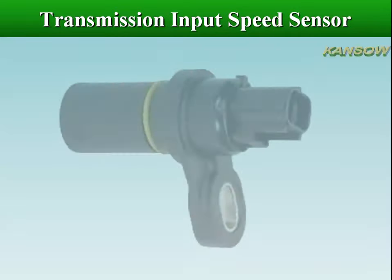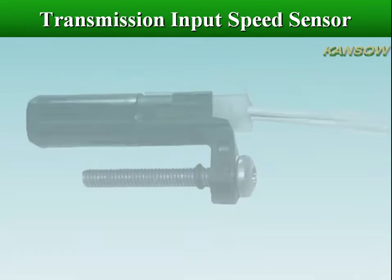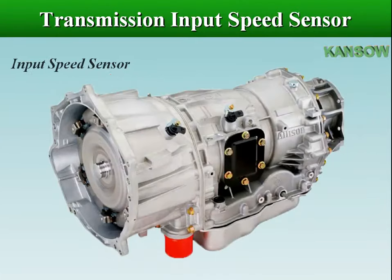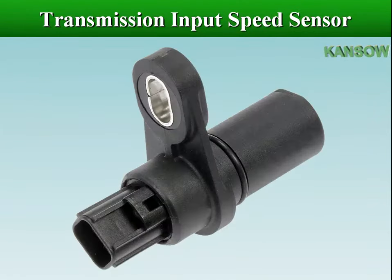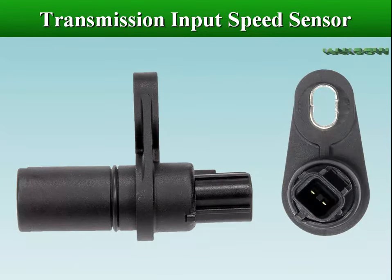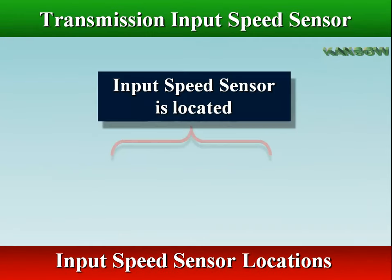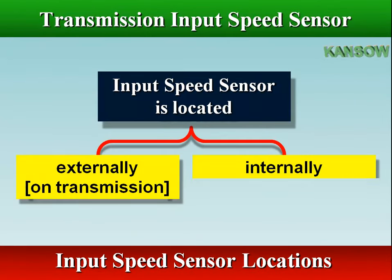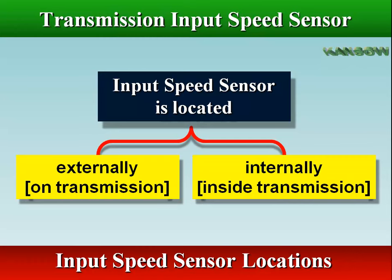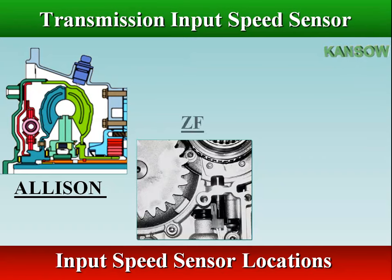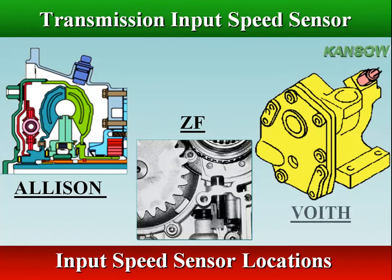The input speed sensor is tasked to monitor the vehicle's transmission input speed. This sensor can measure how many RPM — revolutions per minute — the input shaft is turning. The input speed sensor is located on or inside the vehicle's transmission, and its tone wheel can be identified in some automatic transmissions.